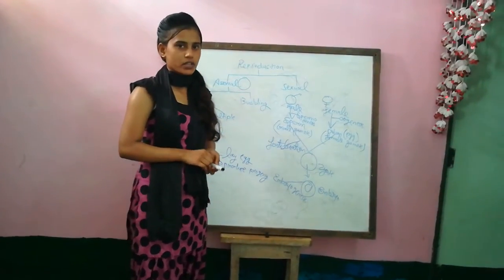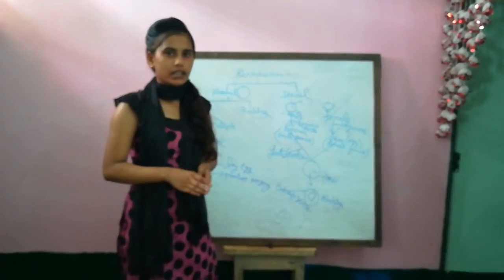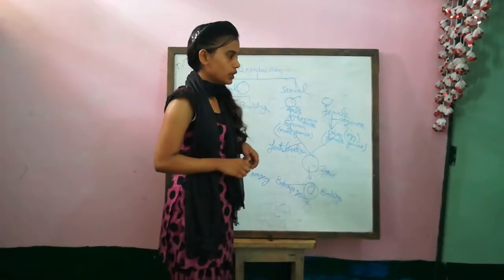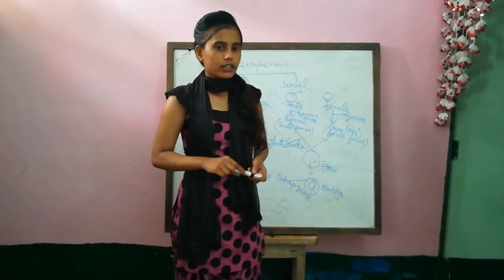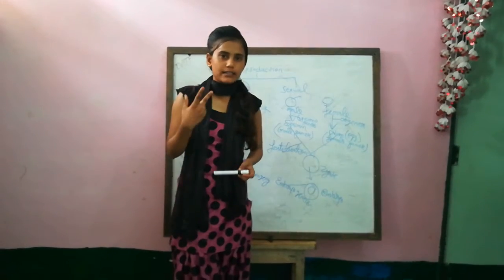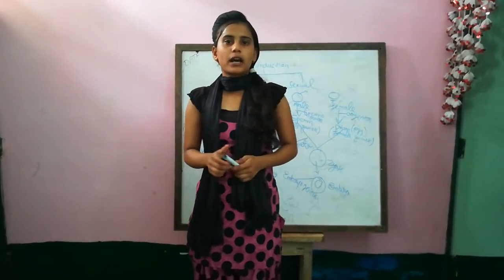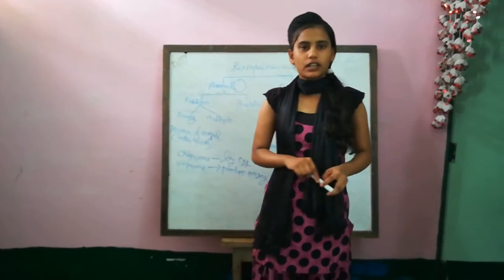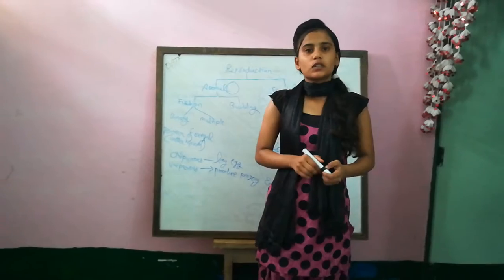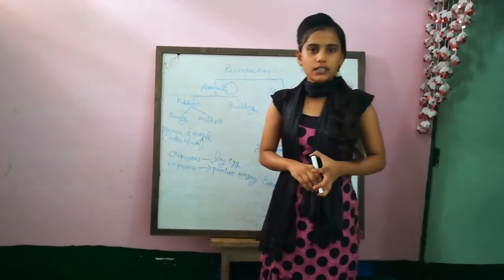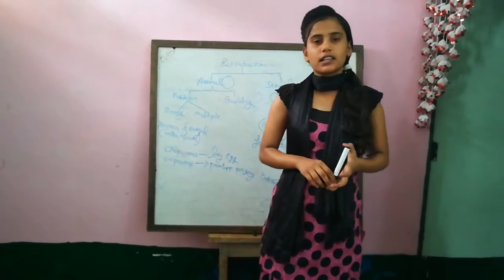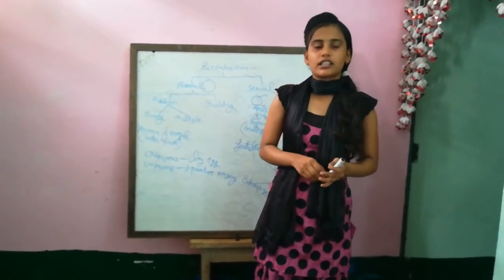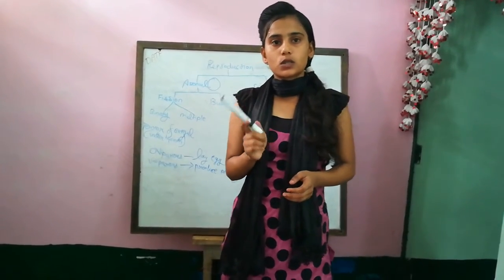Now, events in sexual reproduction. There are three events: mainly pre-fertilization, fertilization, and post-fertilization. Pre-fertilization is the first process, in which an organism will grow and mature and produce progeny. Post-fertilization events start at the end of fertilization.